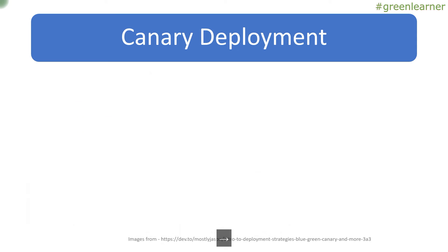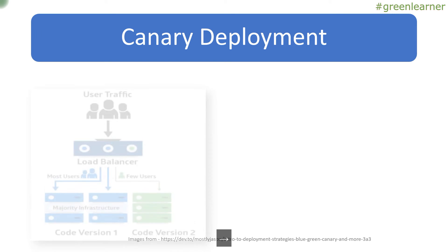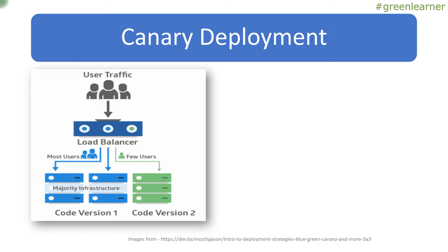Coming to the next one — canary deployment. Canary deployment mainly focuses on a specific set of customers. It can be based on gender, demographic data, or other criteria. A real-world example: when Facebook launches a new feature, it's possible they launch it in a specific geographic region. If you're in the US you can access that feature, but if you're in India or another country you cannot, because the feature is only enabled for that demographic region.